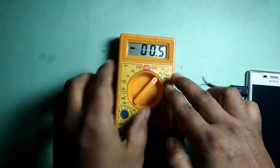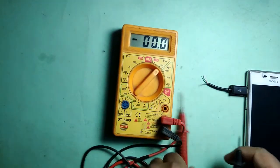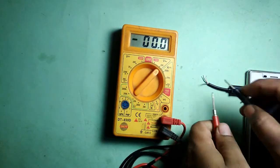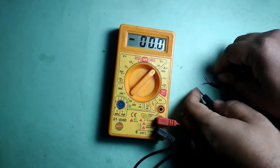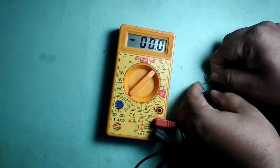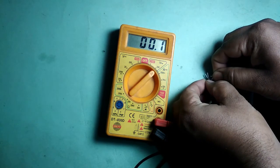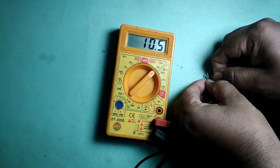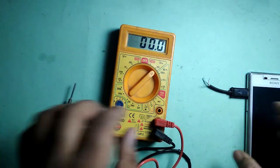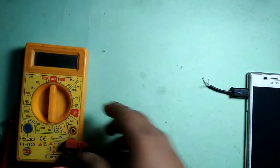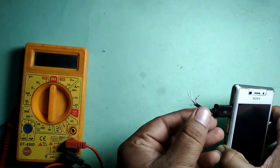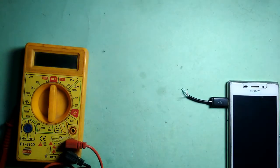Now the multimeter is on. Connect red wire to red and black to black. You can see the red one for negative. Now connect red for positive and black for negative.